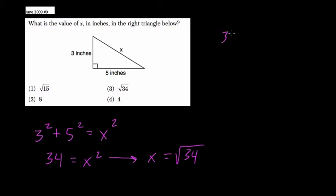But realize if you try and break down 34 into its factors, you get 2 times 17, both of which are prime and cannot be broken down any further. So here, your answer is 3, the square root of 34. Thanks.